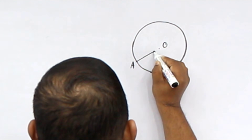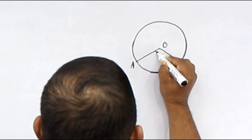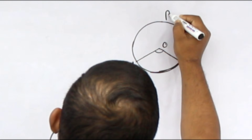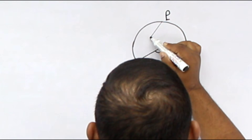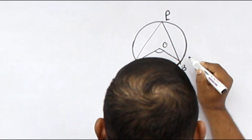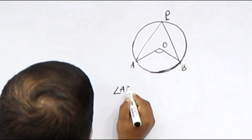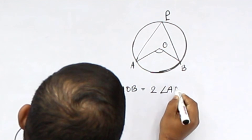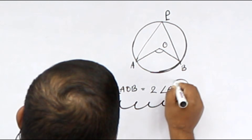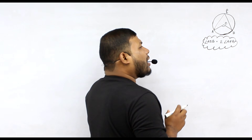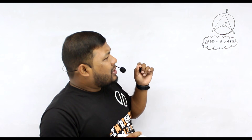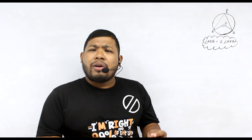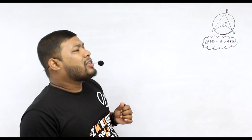Arc AB is a chord of the circle. A point P is taken on the arc opposite to arc AB. APB is the angle formed. The angle AOB is formed at the center by arc AB. The angle formed on the opposite side — what is its value? AOB is equal to twice APB. We will prove this. In what area will we use this theorem directly?